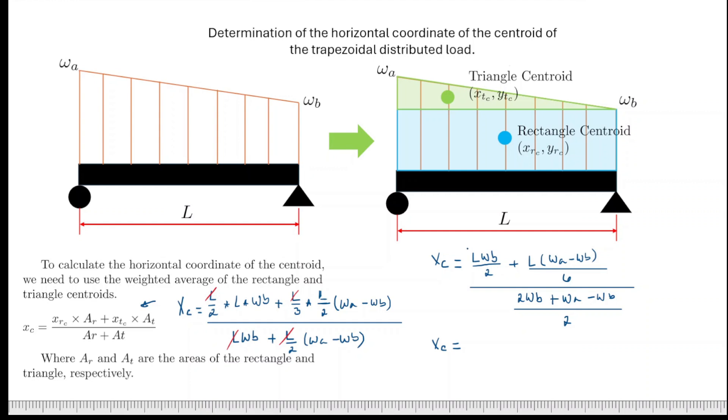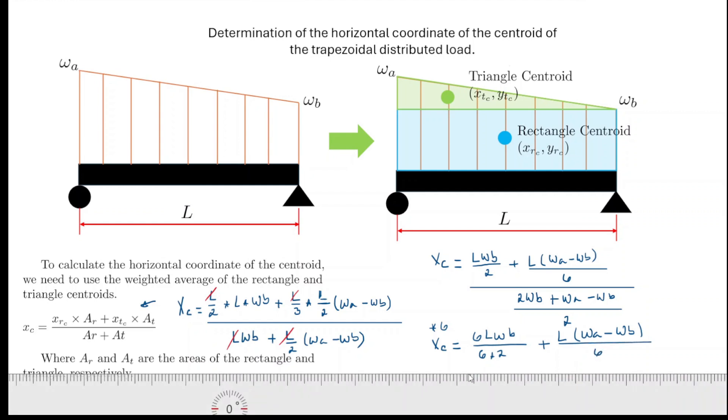So in this one on the top, I could multiply by six here on the top. And then that would allow me to have one fraction of the same type. So I multiply by six here, so it's going to be 6LWB/12 plus L(WA - WB)/6.